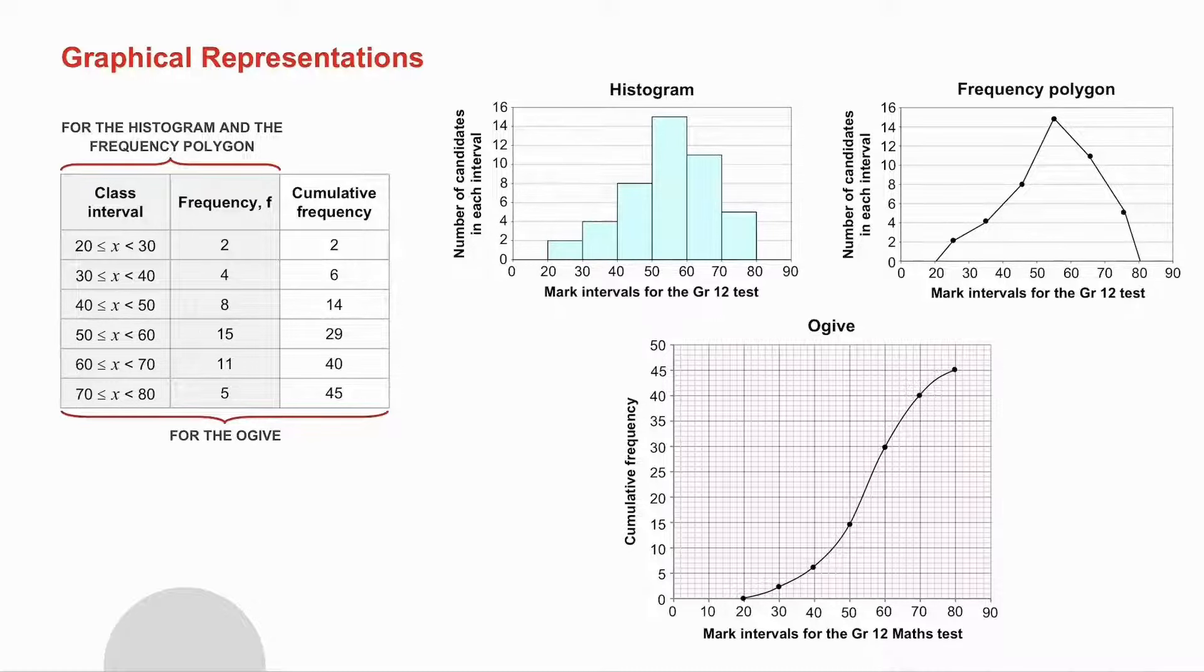For the frequency polygon you use the midpoint. So the midpoint of this interval is 25, so I plot 25, 2. The midpoint is 35, so I plot 35, 4.